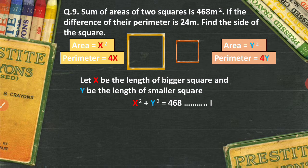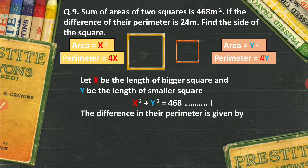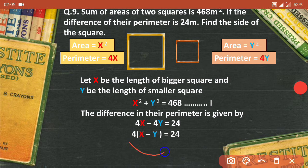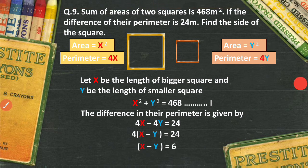And the difference in their perimeter will be 24, so 4x minus 4y will be equal to 24. Now what I will do over here is I can take 4 common. So it will become x minus y equals 24. Let us take this 4 from here on the other side and divide it.